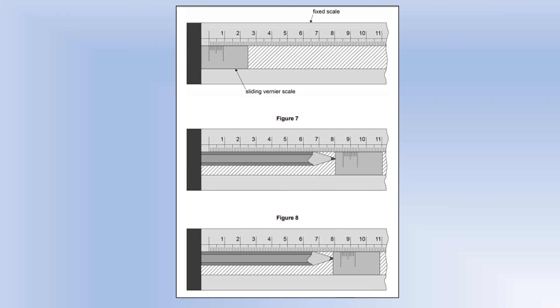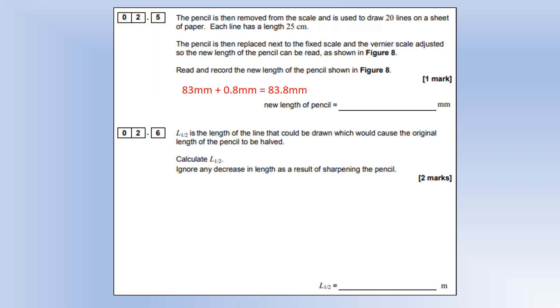We're looking for the large division on the main scale. It's just gone past 83 millimeters. And the one that best matches up there, I reckon, is the eighth division of the vernier scale, giving us a total length of 83.8 millimeters.